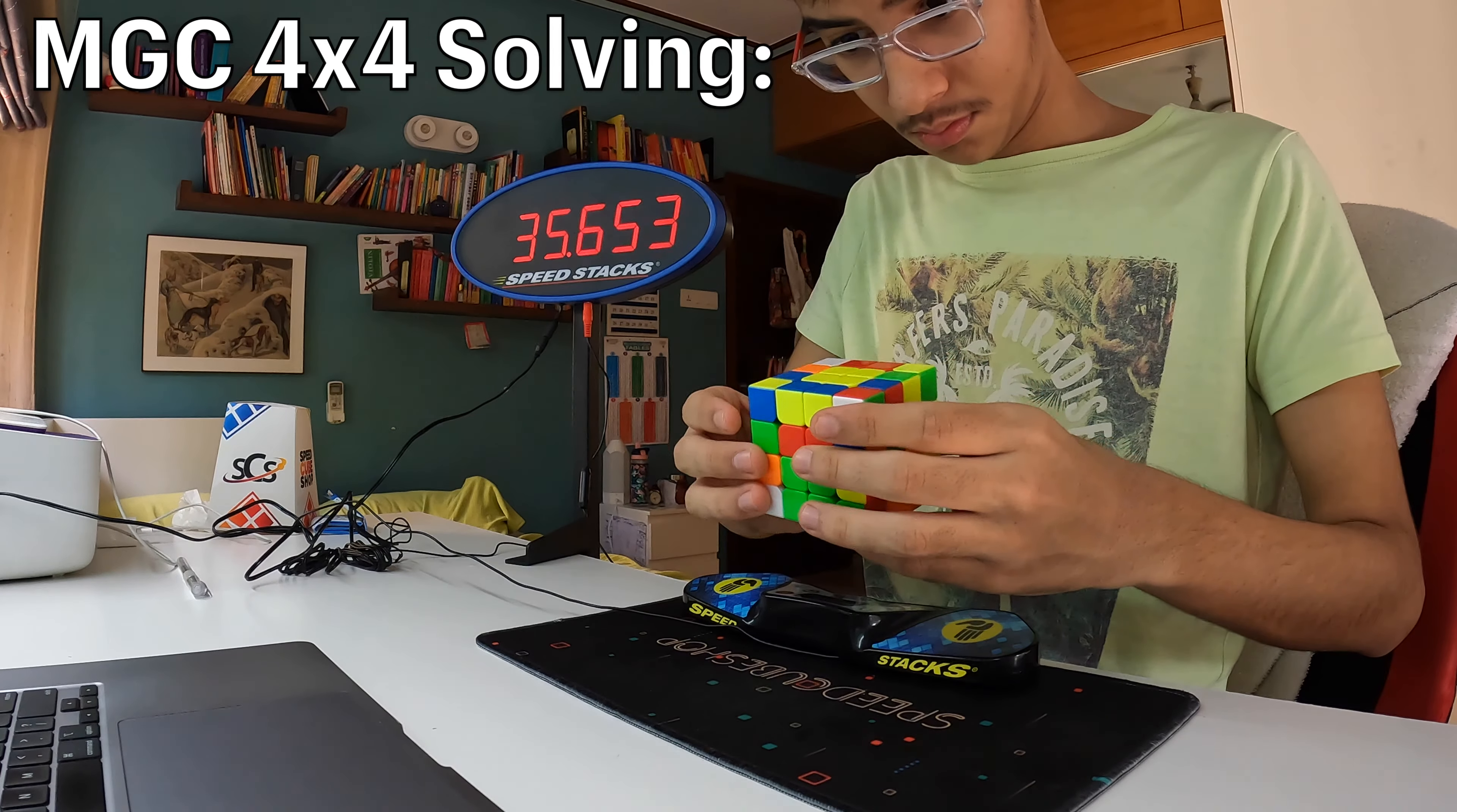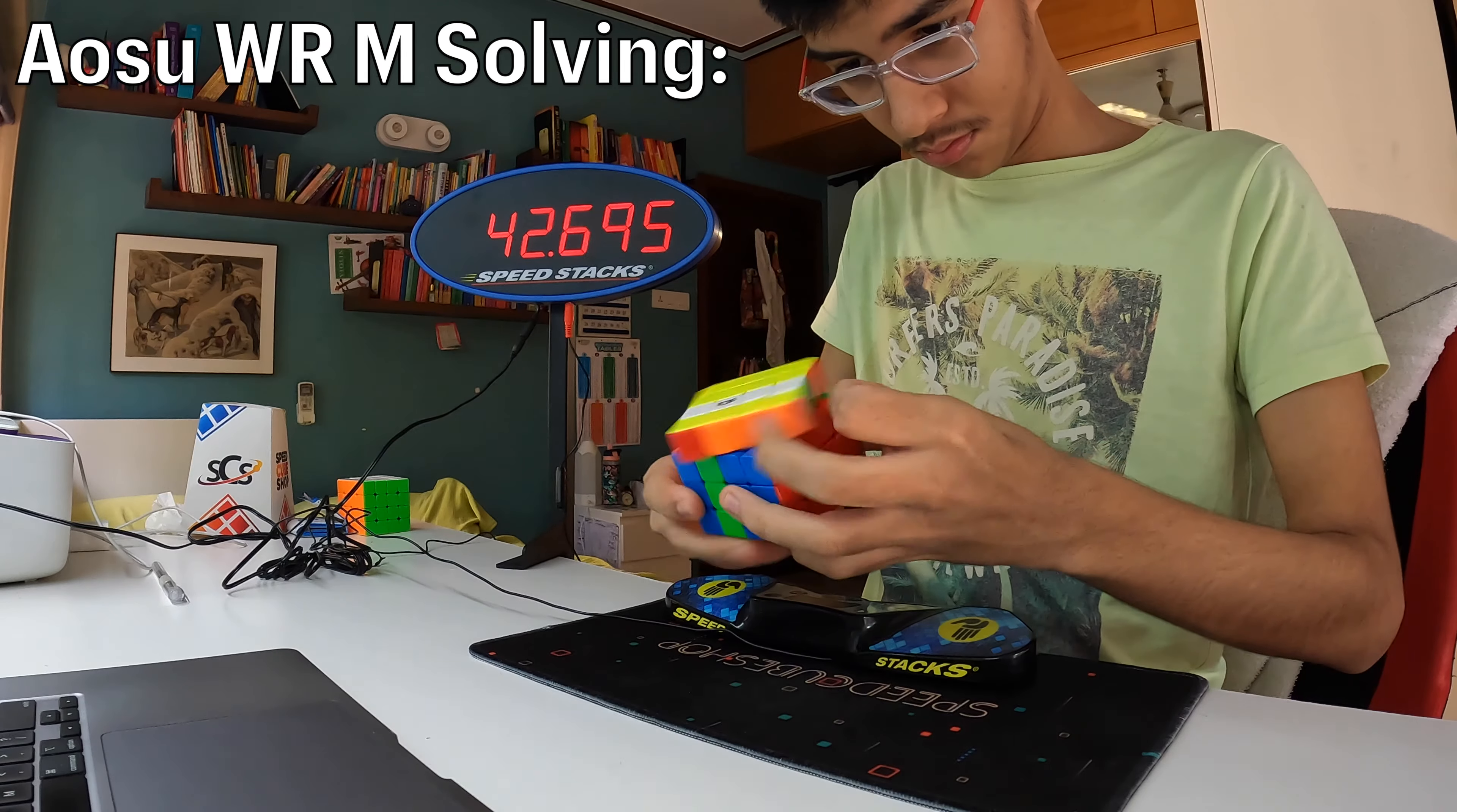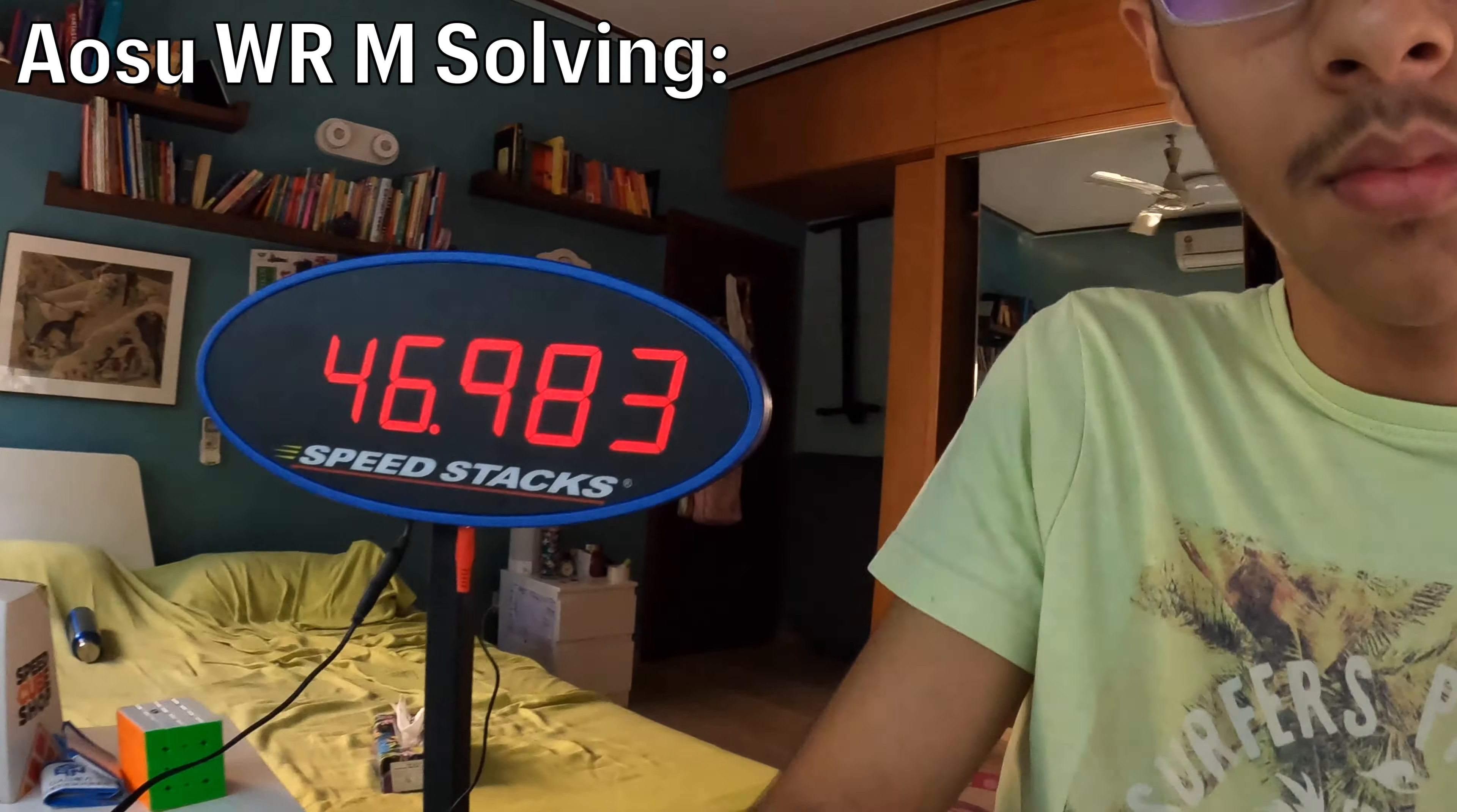Therefore, if you are unable to spend a lot on a 4x4, the MGC is a great option. Finally, if you want something even cheaper, I've heard the Yusu V2M and the Meilong M 4x4 are quite good. However, I haven't really tried them extensively.